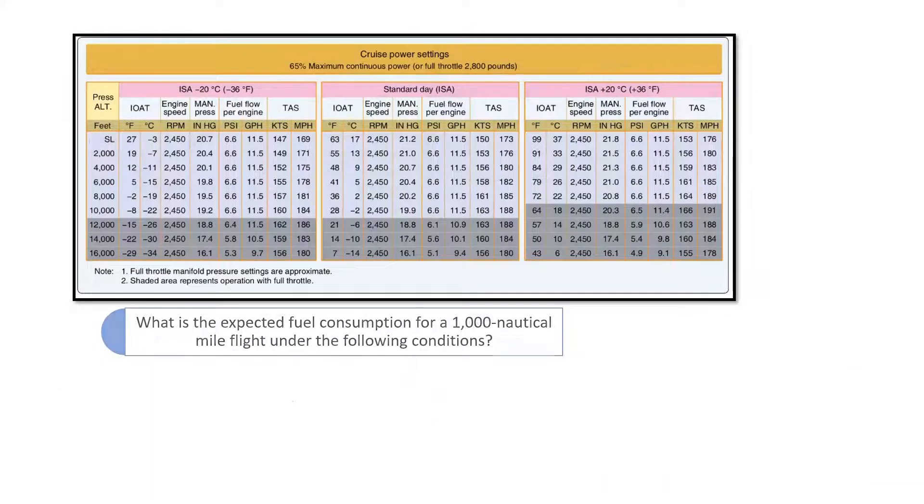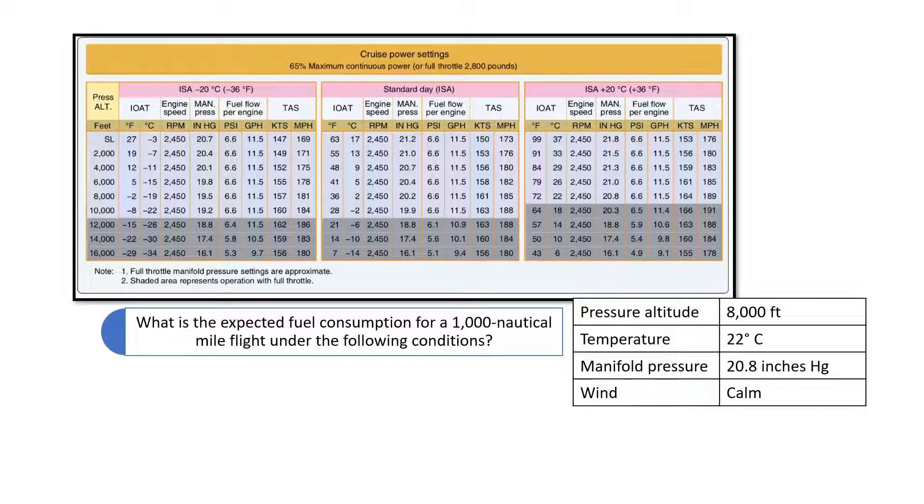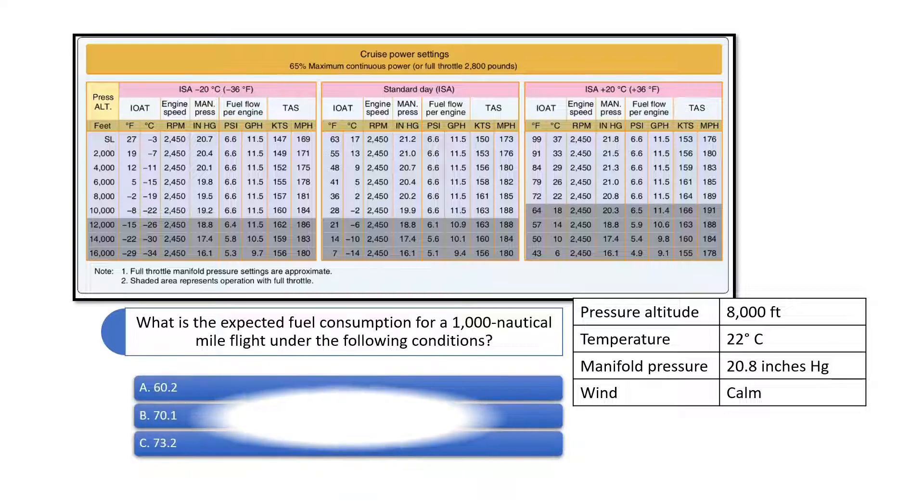What is the expected fuel consumption for a 1,000 nautical mile flight under the following conditions? Pressure altitude is 8,000 feet, outside air temperature is 22 degrees Celsius, manifold pressure is 20.8 inches of mercury, and the wind is calm.